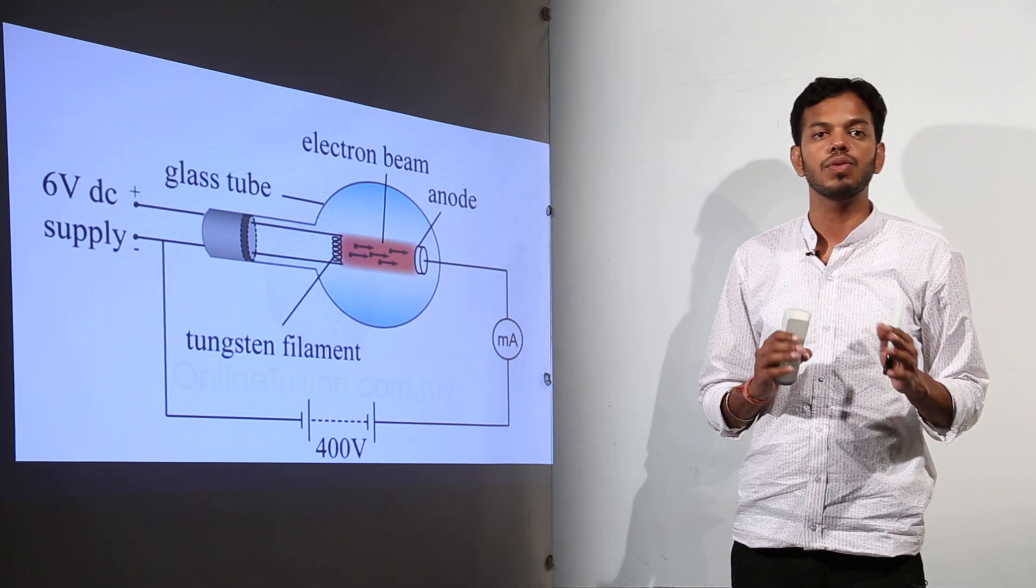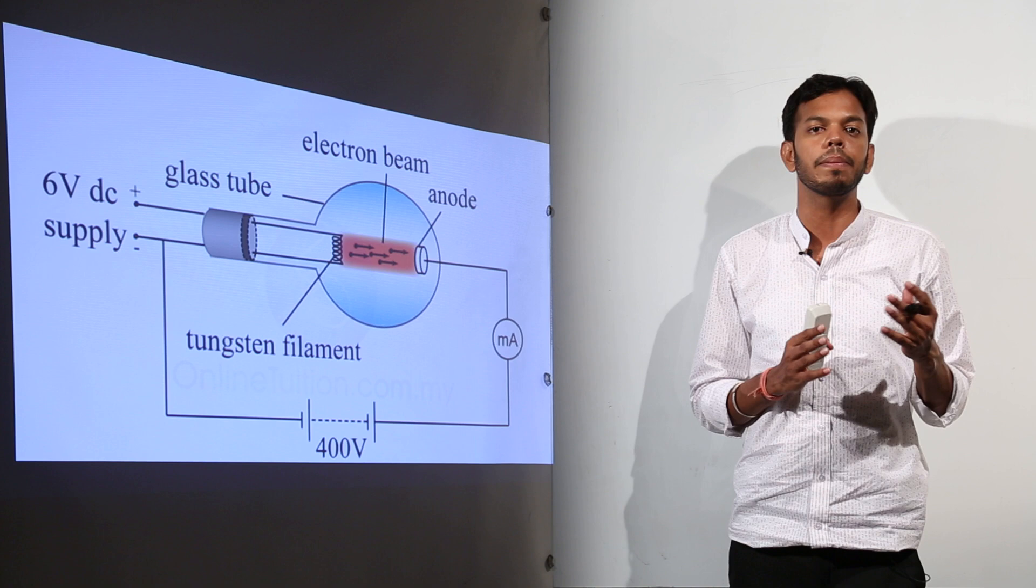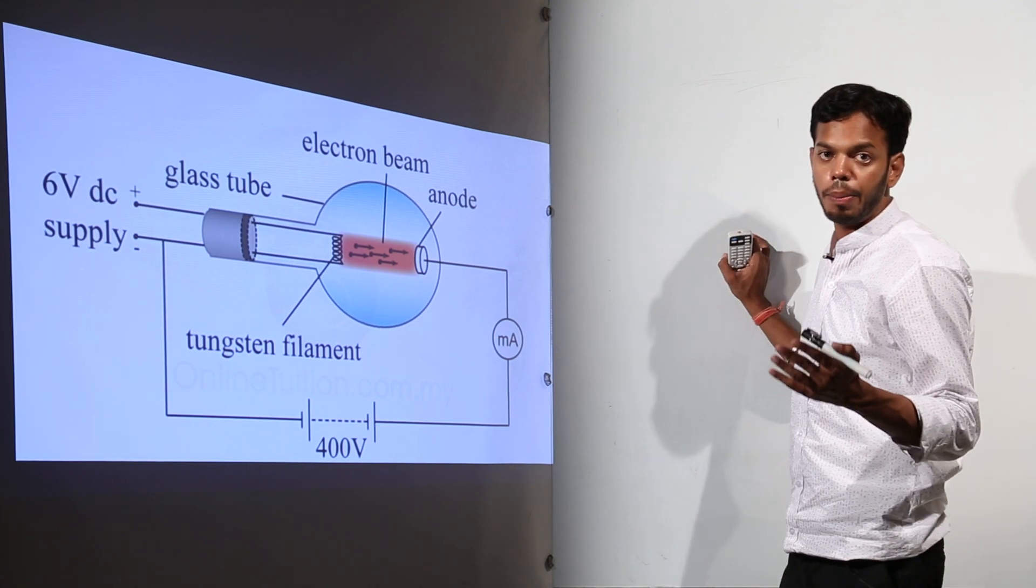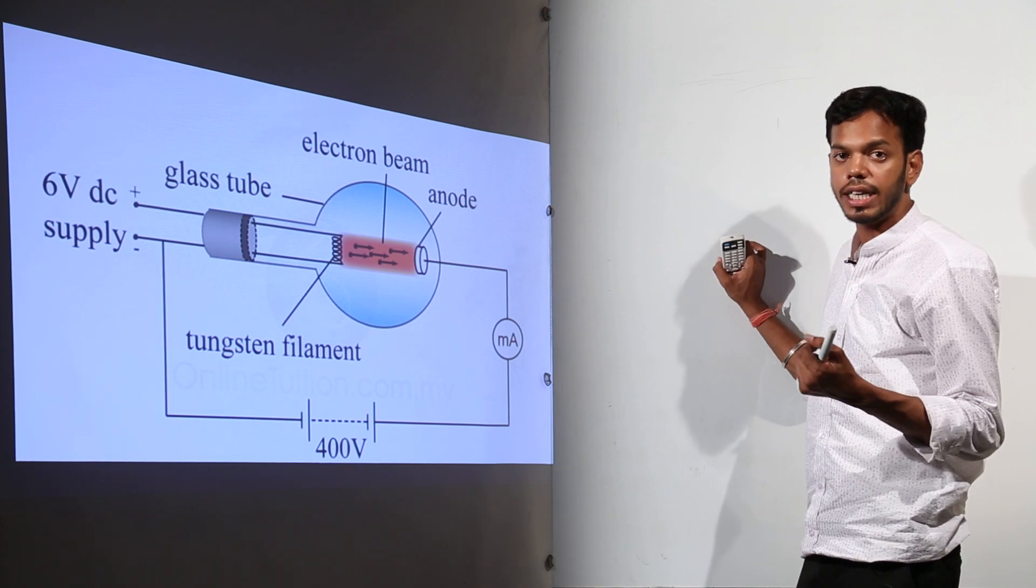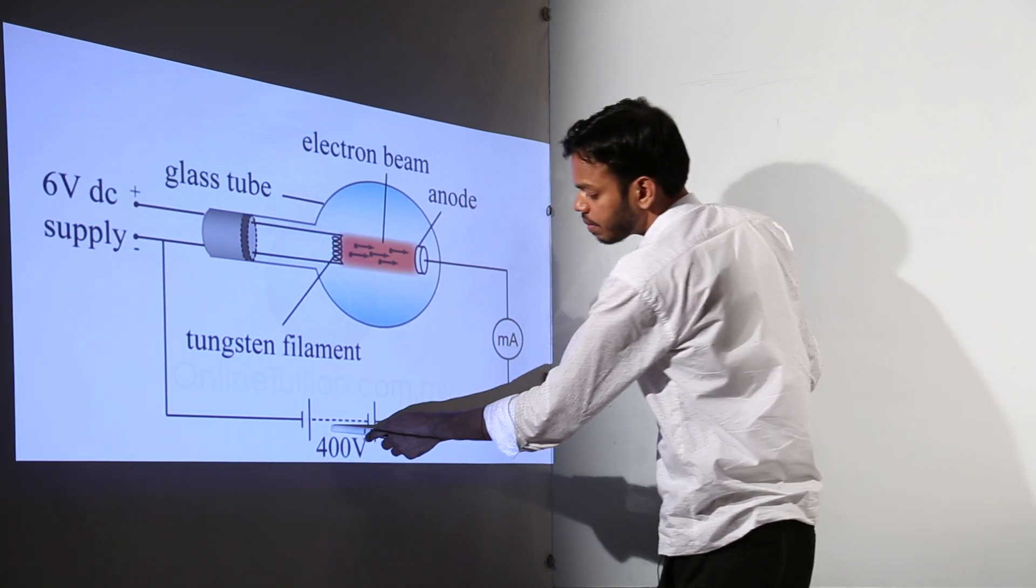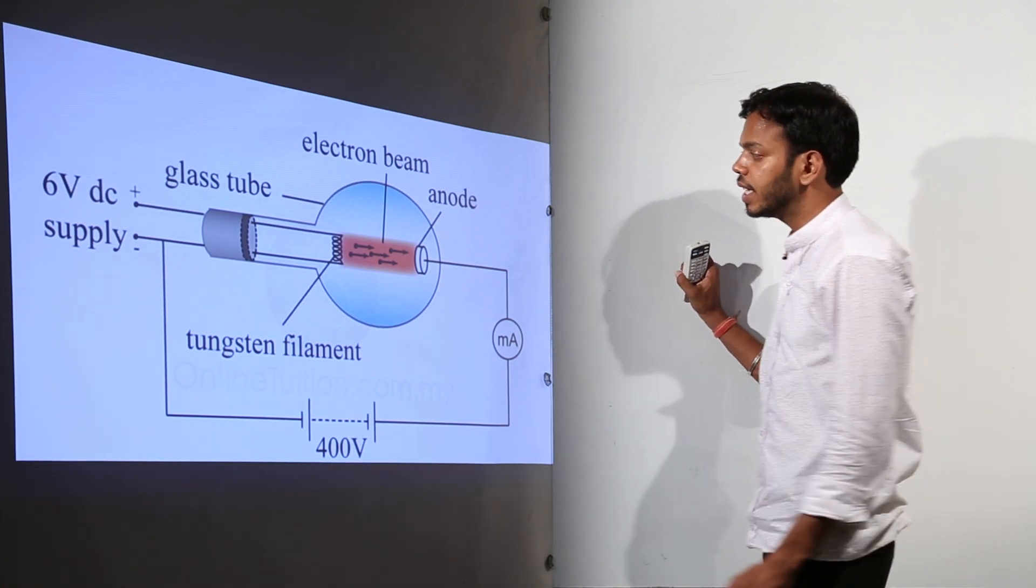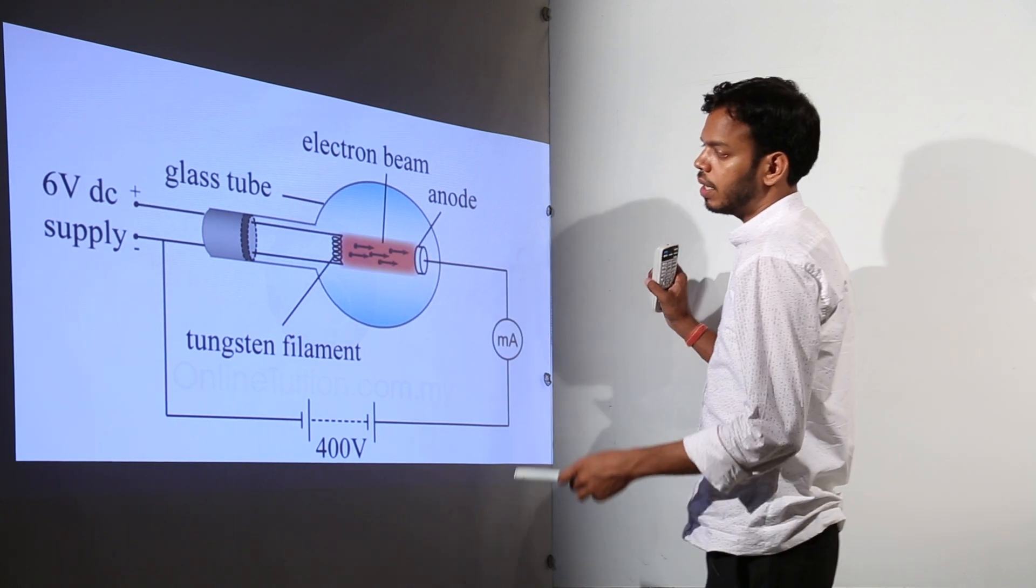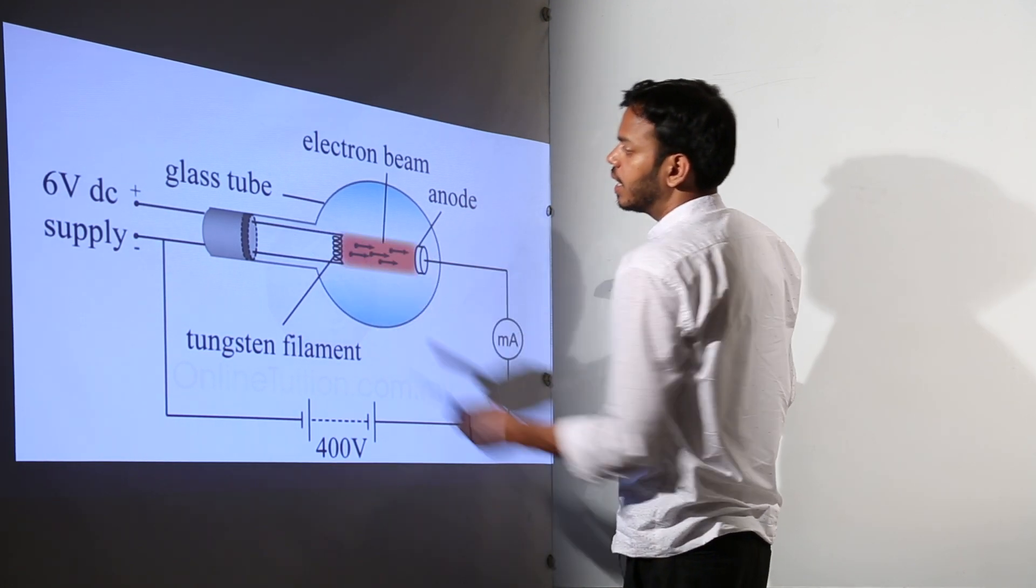There was this ammeter which shows the deflection, that means the current has flown. This phenomenon clearly explains that thermionic emission takes place. That means electrons do get liberated from metal surface when they are heated up to certain temperature provided other circumstances, a huge potential difference and small potential difference between this filament wire.